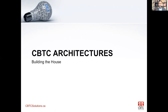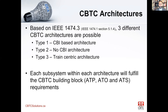Architecture. We've defined the foundation of a CBTC system through its building blocks — ATP, ATO, and ATS. Based on IEEE 1474.3, there are three types of architectures: type one — CBI based; type two — no CBI; and type three — train-centric. Each architecture satisfies most of the functions defined in the building block sections.